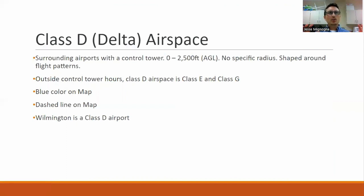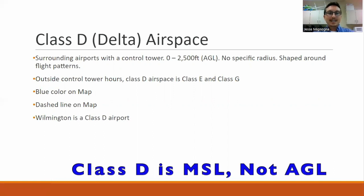Delta is the next airspace — these are your more regional airports. Class Charlie is still a city airport, not your busiest but like Raleigh and Myrtle Beach, which are fairly busy and international. Deltas could be international but usually aren't — they're more regional, smaller airports, but still almost always commercial with commercial traffic. The airspace surrounds airports with a control tower, zero to 2,500 feet. No specific radius — it's shaped around the flight patterns, though I still mostly see deltas as circles.